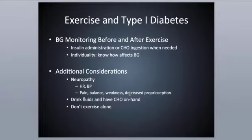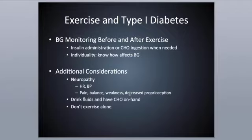Monitoring blood glucose before and after exercise is key, and during exercise if there's a break in the activity. Insulin administration or carbohydrate ingestion should occur when needed. Going back to the principle of individuality, each person needs to know how their blood glucose will be affected by exercise or by ingesting a certain amount of carbohydrates — for example, knowing how much a candy bar will affect blood glucose at certain points during exercise.